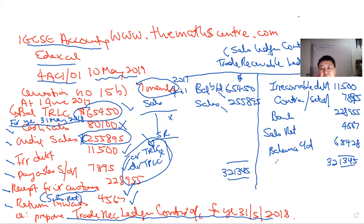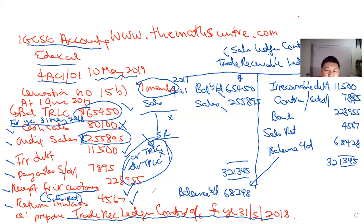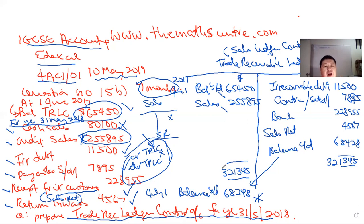The balance carried down is 68,428. Remember this is not a credit balance — it is actually a debit balance. When you bring it down to the next period, you have balance brought down of 68,428 on 1 July. This means the total amounts due from all trade customers to us is 68,428. You should compare this figure with the total of individual balances in your sales ledger — if they agree, the double entry has been kept correctly.